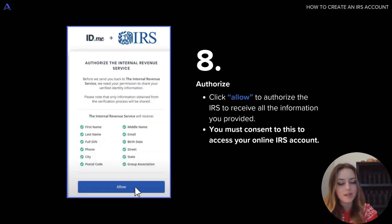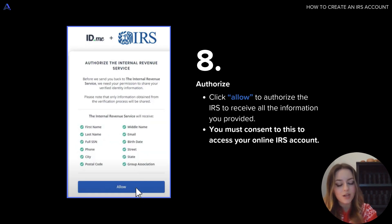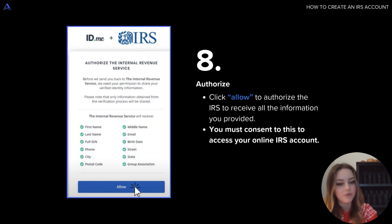This includes things like your first name, your last name, your social security number, contact information, everything to my left. Please note that you must click the blue allow button and consent to this to access your online IRS account. Your online irsid.me account cannot be created unless you consent to this information being received.